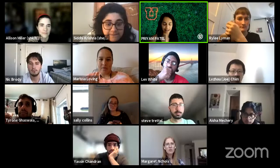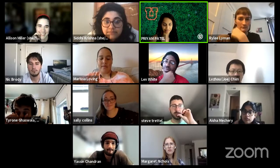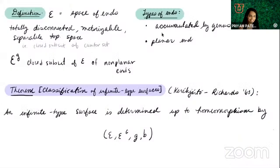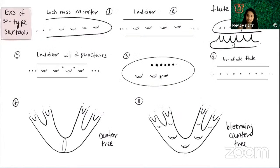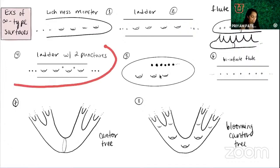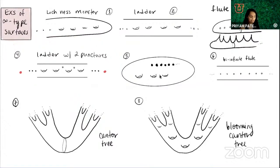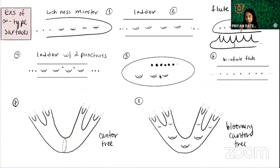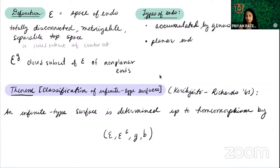There was a brief technical issue with the screen share; now you can see. So I was going back to show that the ladder surface with two punctures has two non-planar ends and two planar ends — four points total as the end space. And in the Cantor tree example, the end space is a full Cantor set. Here's the classification theorem.